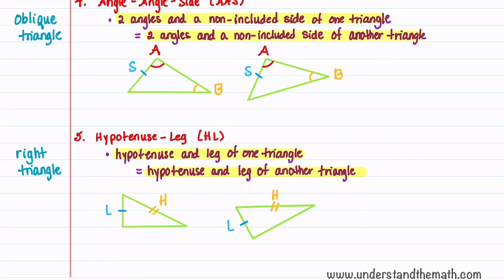Let's summarize all of this. If the conditions in any of these five theorems are met, then we'll know that the triangles are congruent. All their sides will be equal and all their angles will be equal.